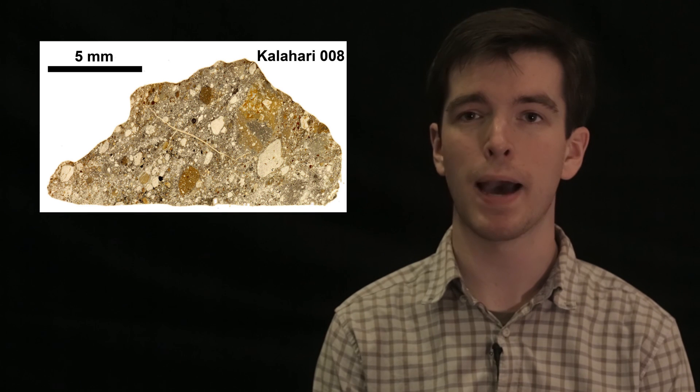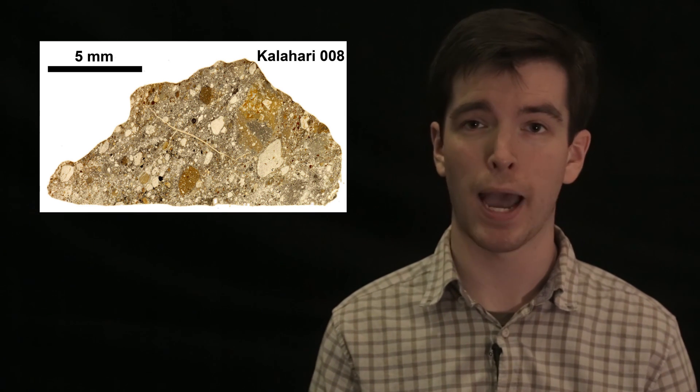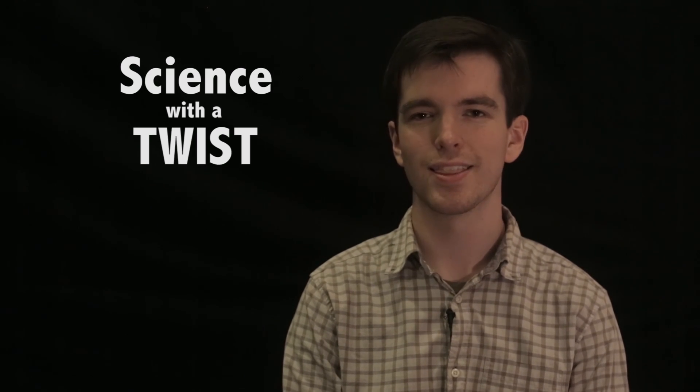This bolsters the Giant Impact Hypothesis. It's possible the impact balanced out the isotopes, making their differences harder to see. But now we can tell that these two bodies do have distinct histories. It goes to show the importance of revisiting old studies and challenging the proven. That's all for Science with a Twist. Thanks for watching.